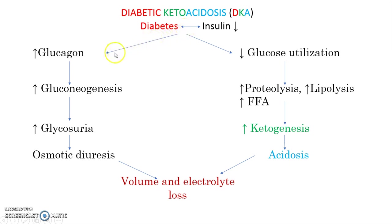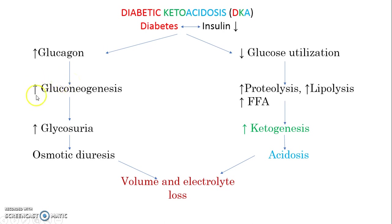In diabetes, there is more glucagon secretion, which will try to increase the release of insulin. And because of it, there will be more gluconeogenesis — newer glucose will be formed.